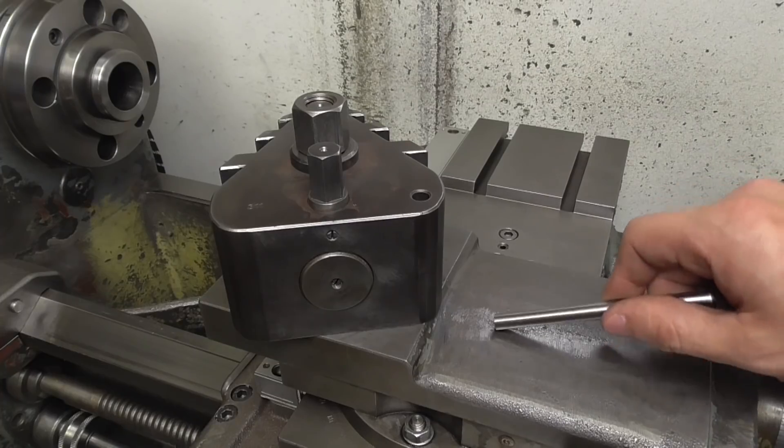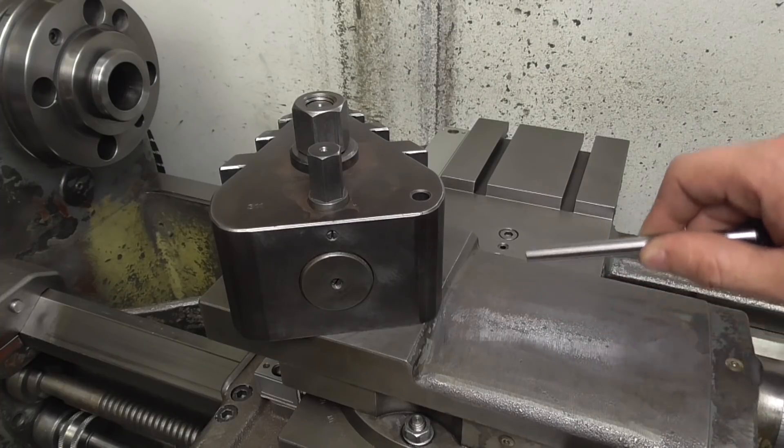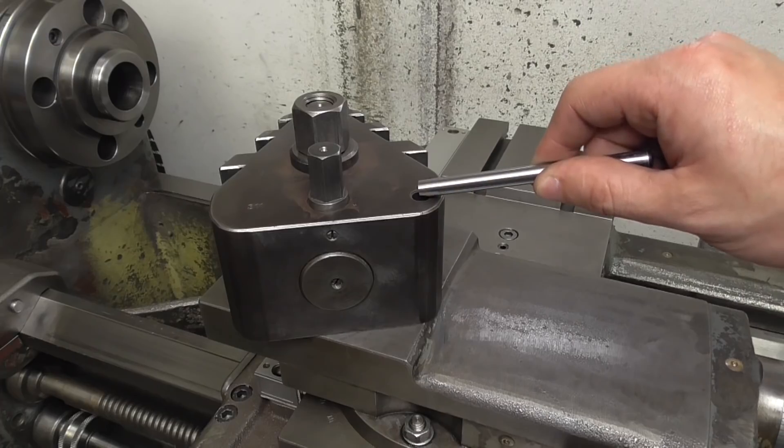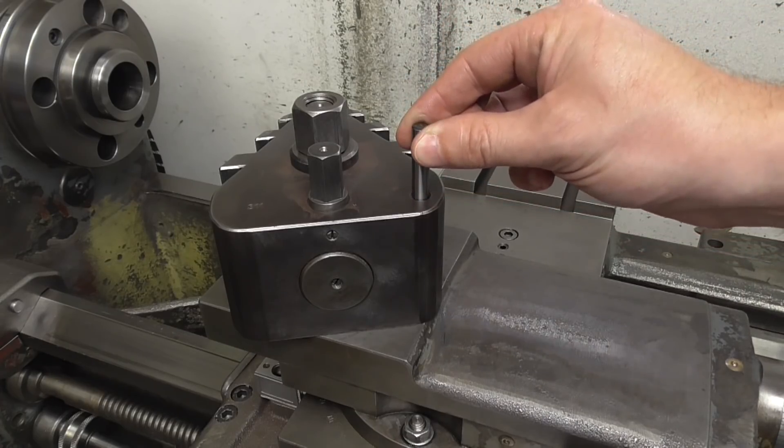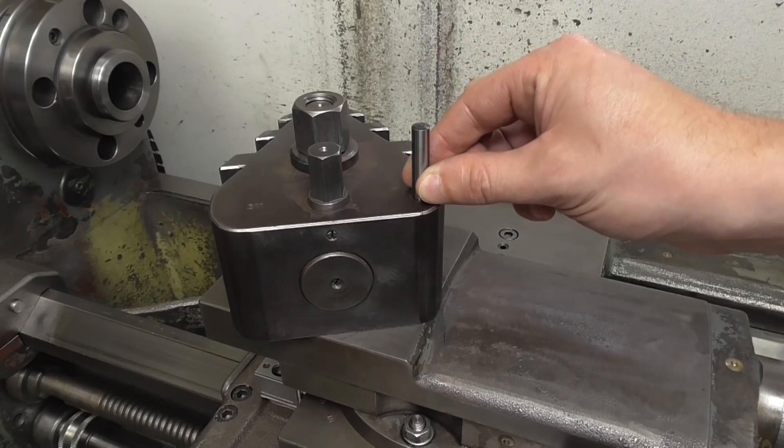So my idea is to drill and ream a hole into the top slide so I can orient the tool post to exactly zero degrees just with a pin connection through this existing hole in the tool post.